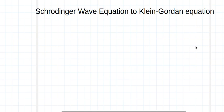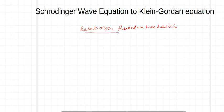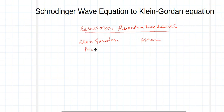Today I am starting with a new formalism: Relativistic Quantum Mechanics. The first attempt was made by Klein and Gordon, and the second attempt was made by Dirac. So there are two approaches: the Klein-Gordon formulation and the Dirac formulation. In this lecture I am going to talk about the Klein-Gordon formulation, which is successful in explaining systems having integral spin but not successful for systems having half-integral spin.